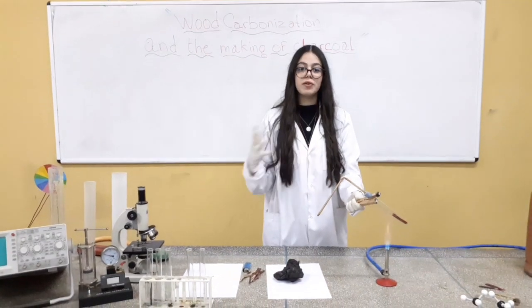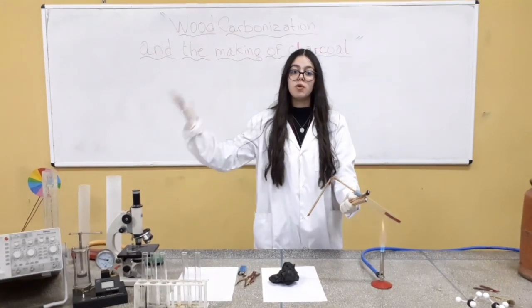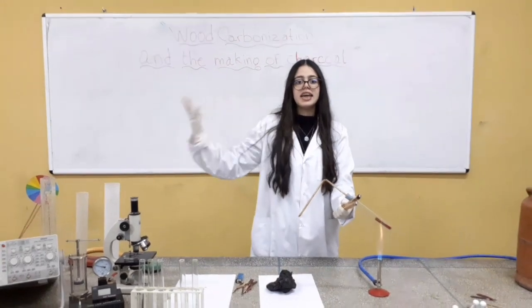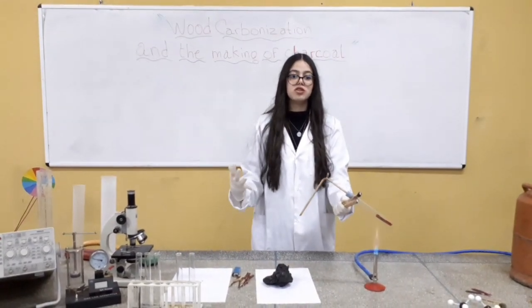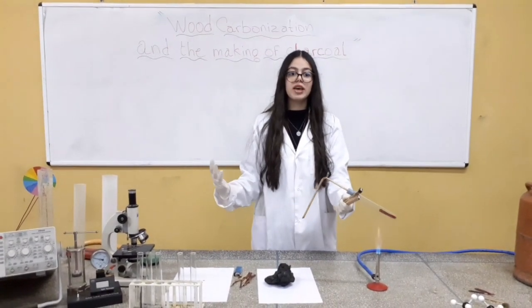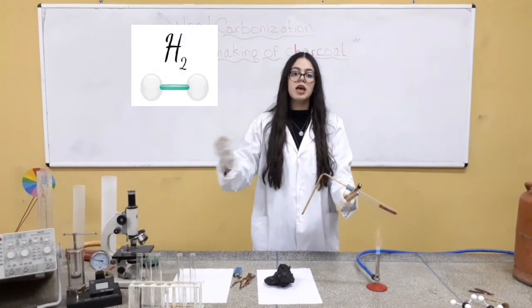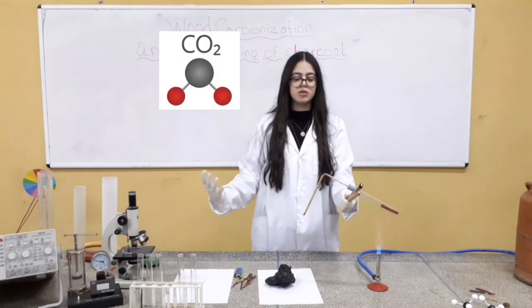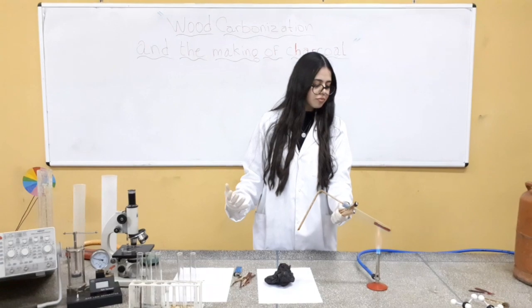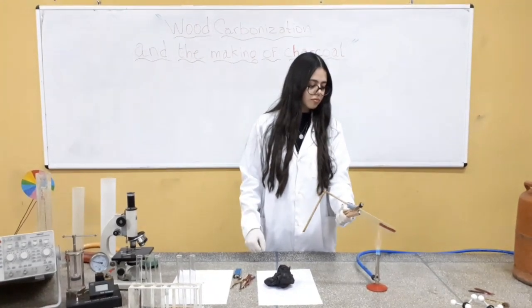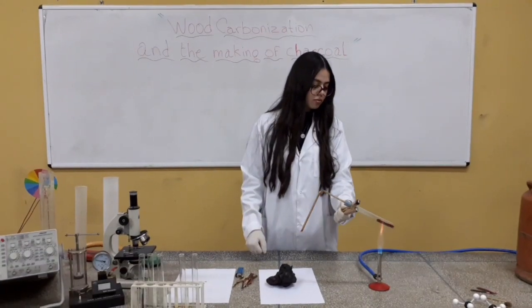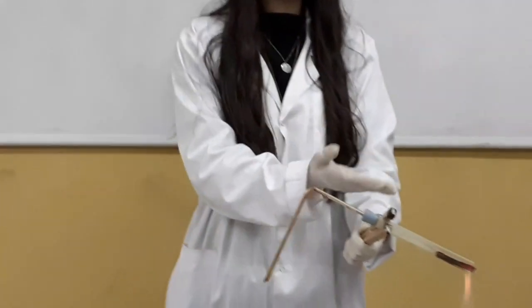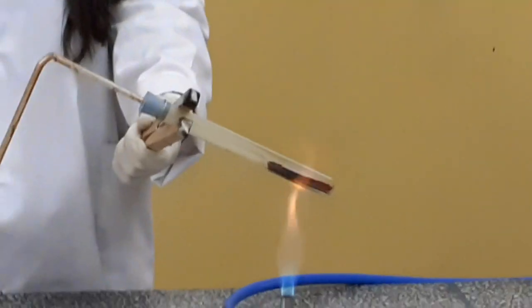Wood begins to spontaneously break down to produce charcoal with water vapor, methanol, acetic acid, and other chemical compounds in the form of tars and non-condensable gases, formed mainly of hydrogen, carbon monoxide, and carbon dioxide. As you can see, a brownish liquid escapes from the wood.